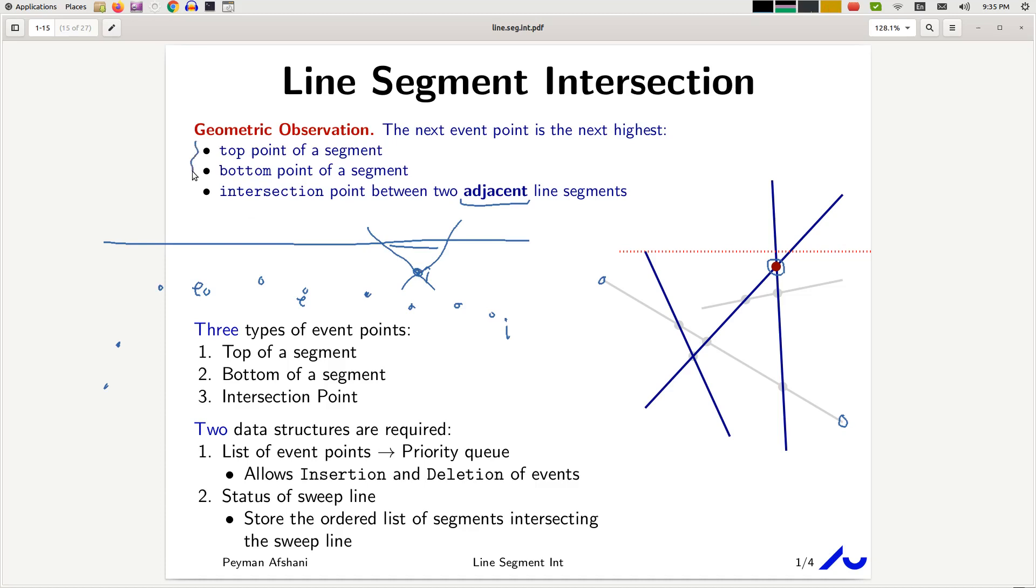The first two is kind of obvious. If the highest intersection point is the top end point of a segment, then it's obvious that's the next event point. And in particular, what this observation implies is that to find intersection points, we only need to check adjacent line segments only.